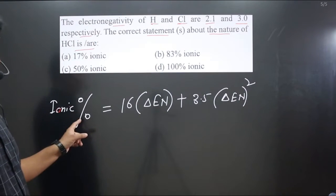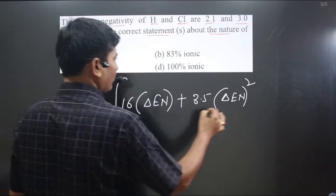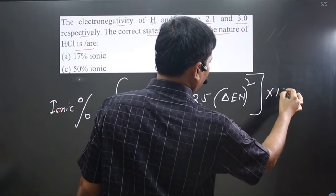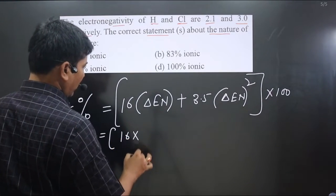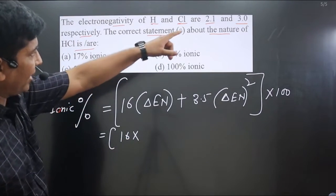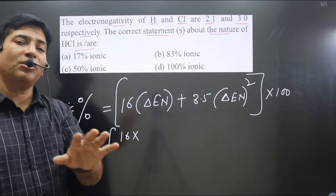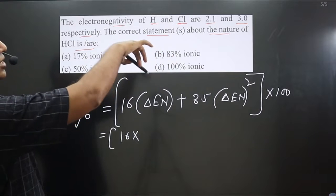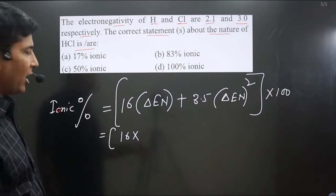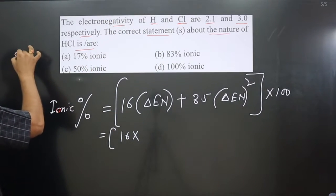Putting this in brackets and multiplying by 100, we have 16 multiplied by the difference in electronegativity. We always subtract the small value from the large value, so the large value is 3.0 for chlorine and the small value is 2.1 for hydrogen.